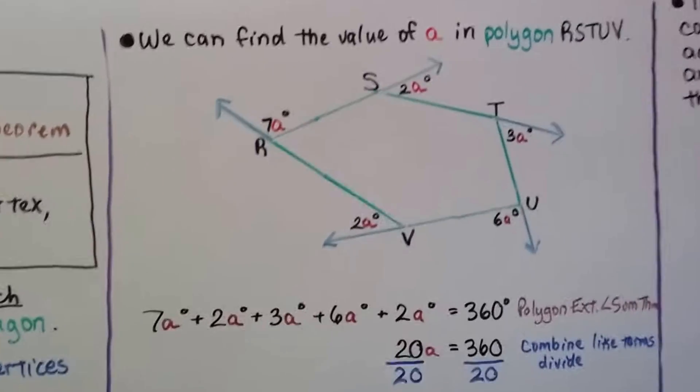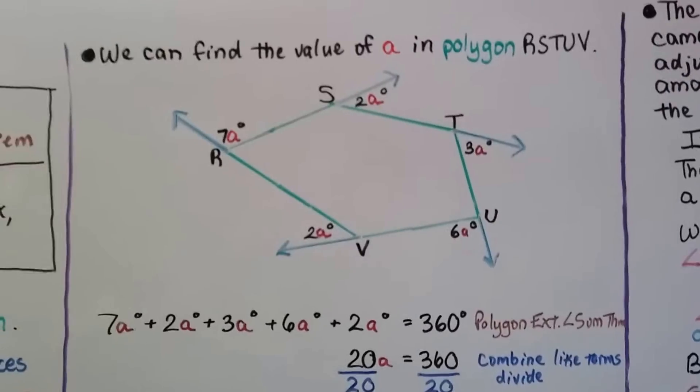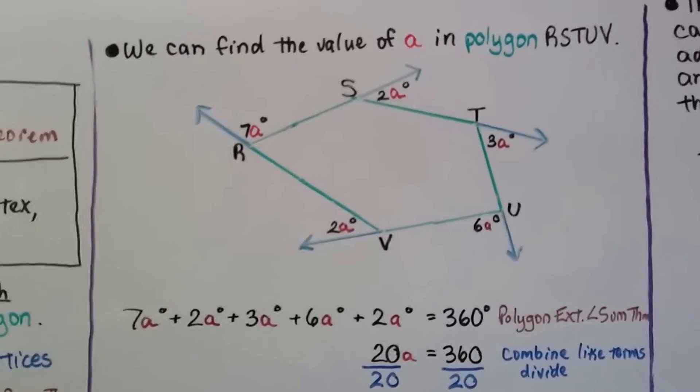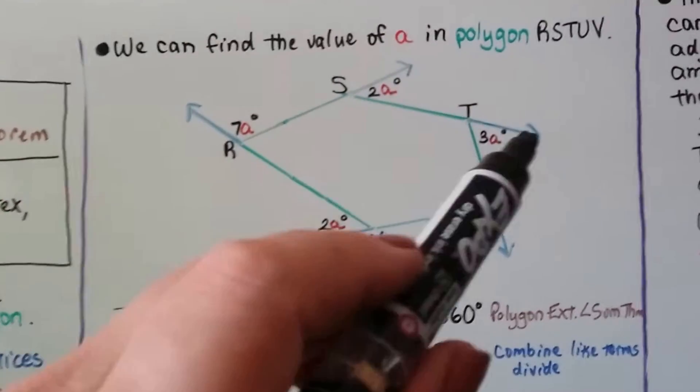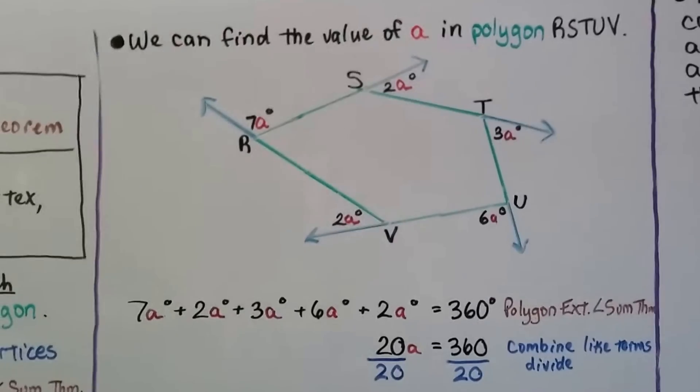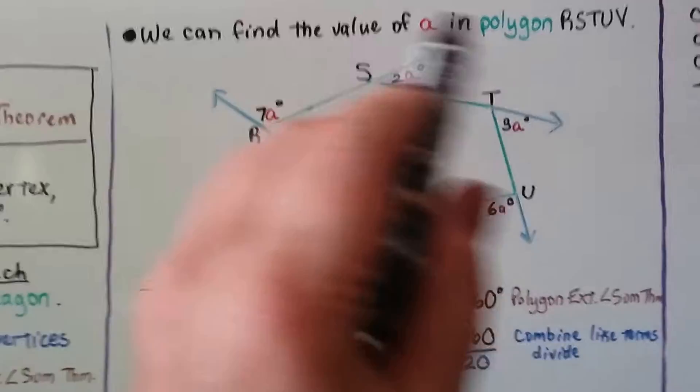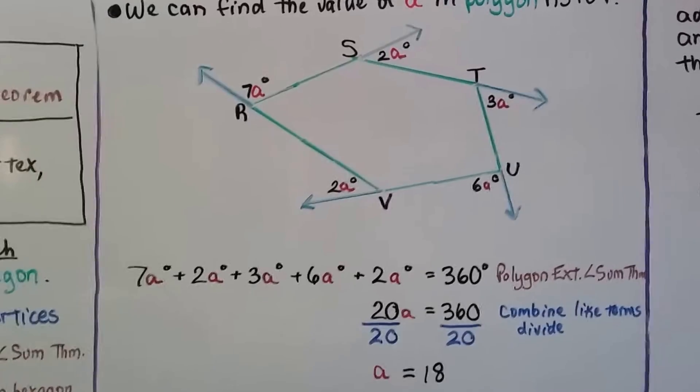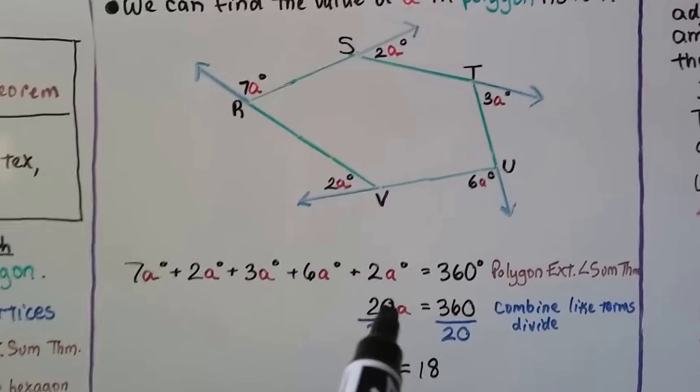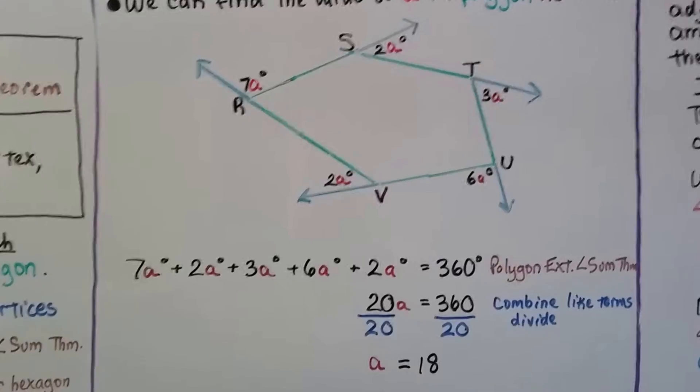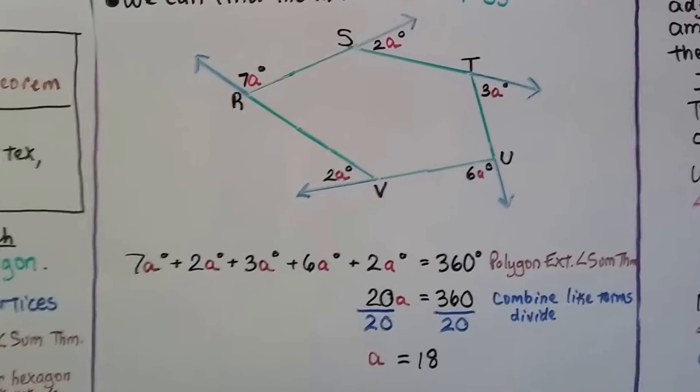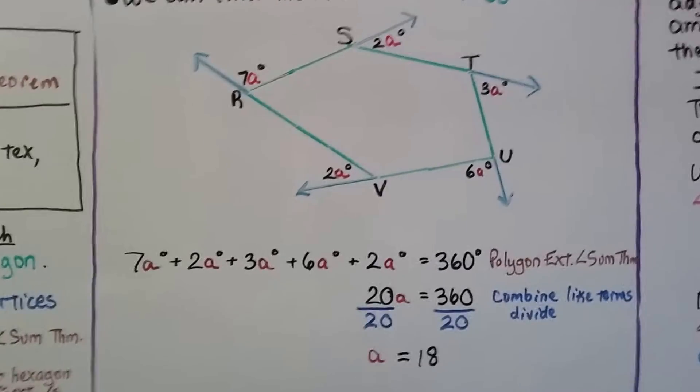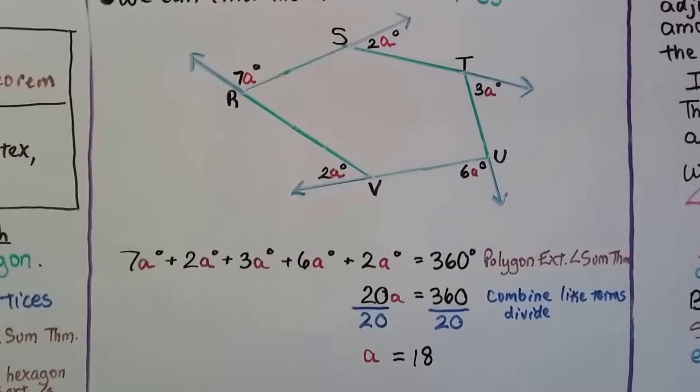We can find the value of a in polygon R-S-T-U-V. We can see they all have an a with a coefficient. And we know that they should all total 360 degrees, according to our theorem. We combine all these like terms, and we get 20a. And that equals 360. Now we divide by the coefficient 20, and we find out that a is equal to 18.